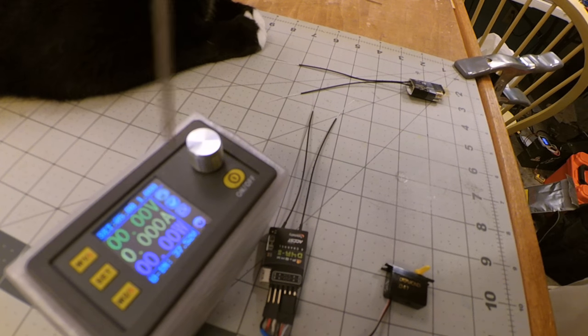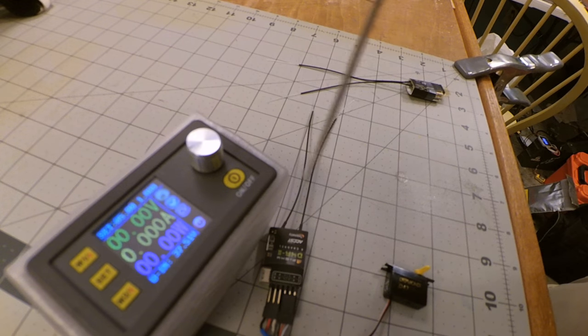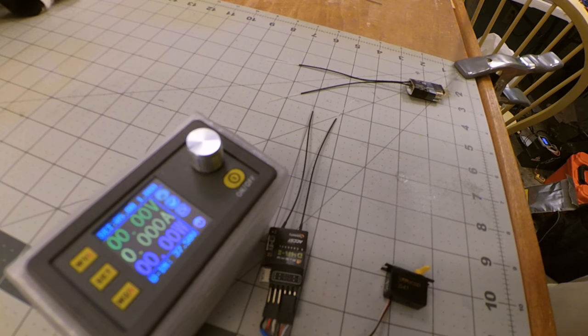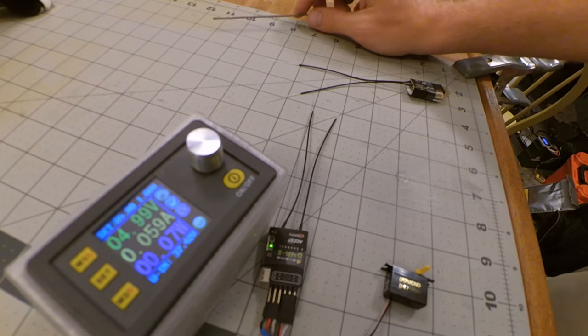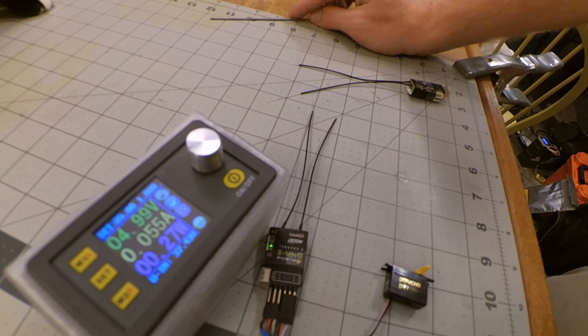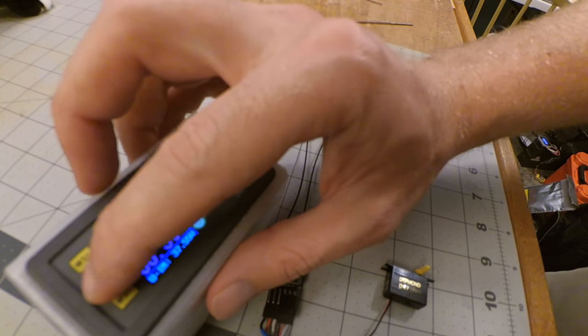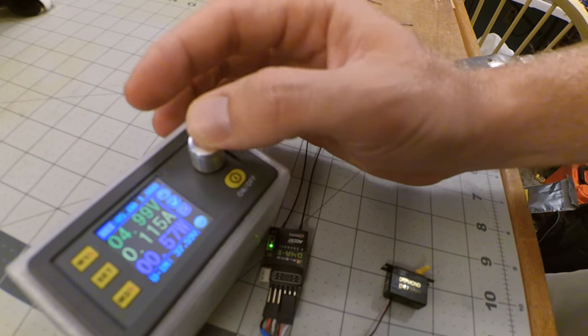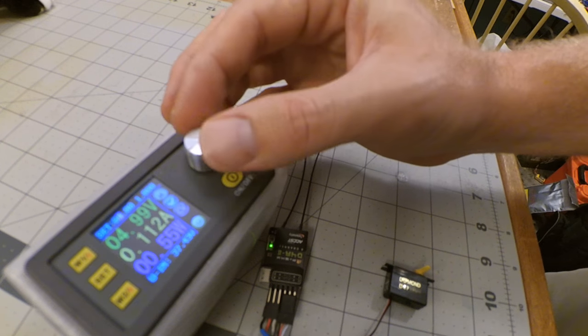It's currently set to five volts, and once I power this on we'll be able to start dropping voltage and see how long it stays connected. Running at a nice stable five volts, we can actually set it lower. We can drop it down to four volts.